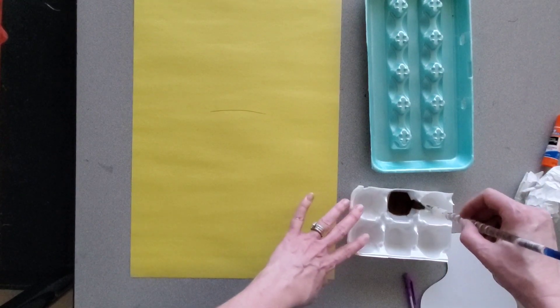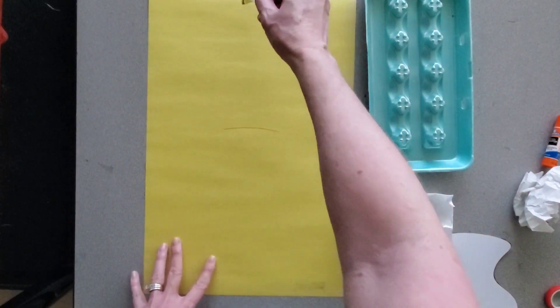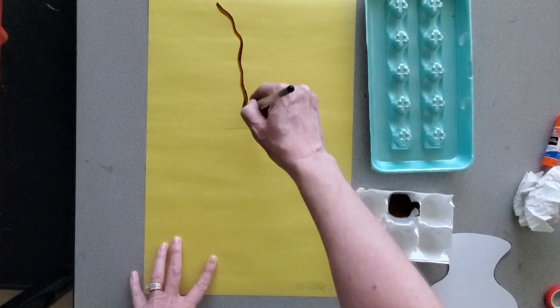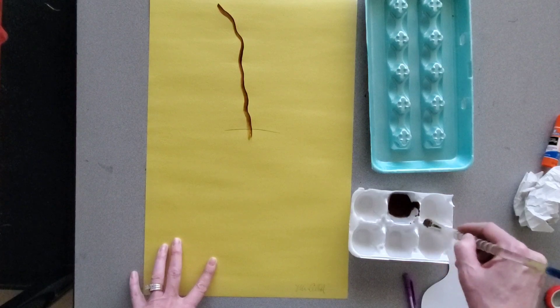I like to wipe mine on the side so I can get this pointier piece, and I probably should wipe the other way to get a pointy piece. Paint is really dry.